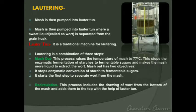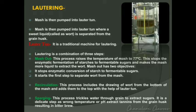The second lautering step is recirculation — drawing the wort from the bottom of the mash and adding it to the top using the lauter tun. The third step is sparging, done by trickling water through the grain to extract sugars. It is a delicate process, as wrong temperatures or pH can extract tannins from the grain husk, producing a bitter flavor. Sparging is done to lock in the color and flavor of the mash.